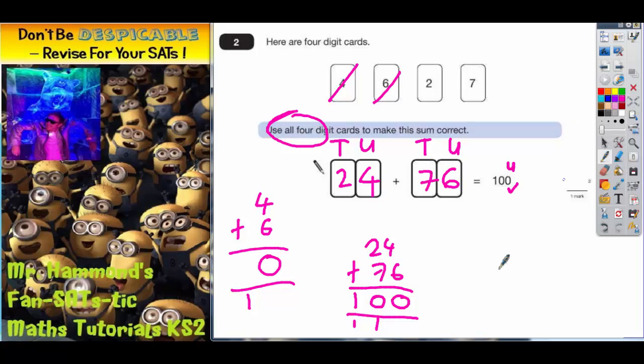If you do want to try it the other way round, let's just double check, see if that works. 74 add 26. 4 and 6 is still 10. 7 add 2 is still 9, plus the 1 is 10. So we've ended up with 100 again.